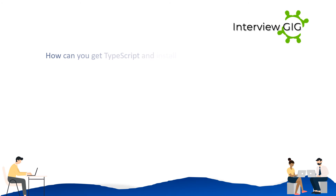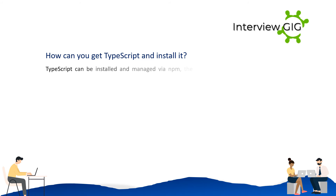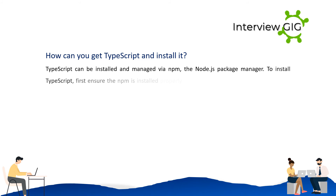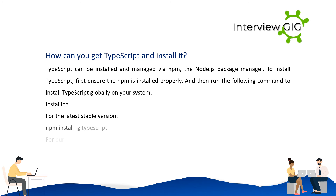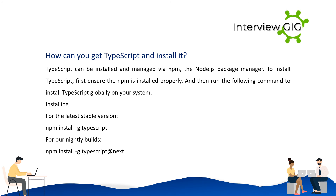How can you get TypeScript and install it? TypeScript can be installed and managed via npm, the Node.js package manager. To install TypeScript, first ensure npm is installed properly, then run the following commands to install TypeScript globally: for the latest stable version, use 'npm install -g typescript'; for nightly builds, use 'npm install -g typescript@next'.